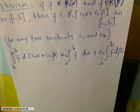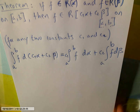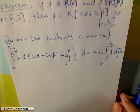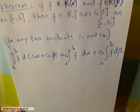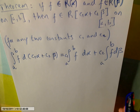This equals C₁ times the integral from a to b of F dα, plus C₂ times the integral from a to b of F dβ. This is very similar to the previous theorem, and the proof is very similar too. You can easily do that at home; if you have any problems please let me know. Just watch the previous video a couple of times and you will do this easily.